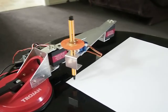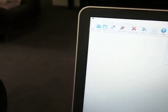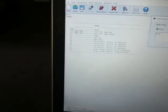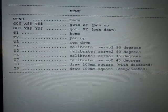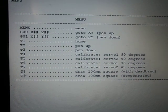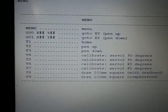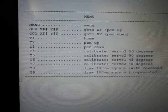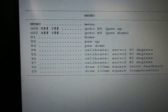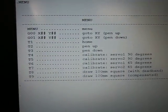Let's run a menu. Let's run option T8 which demonstrates two overlaid squares without the dead band correction.